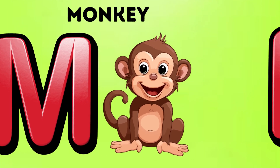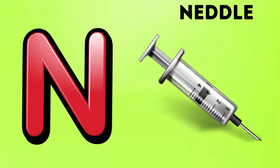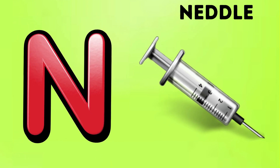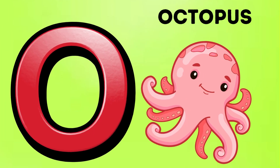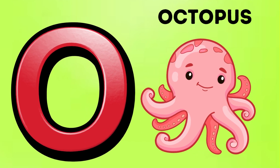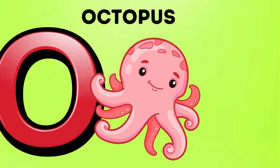M is for Monkey. Ma, Ma. Monkey. N is for Needle. Na, Na. Needle. O is for Octopus. A, A. Octopus.